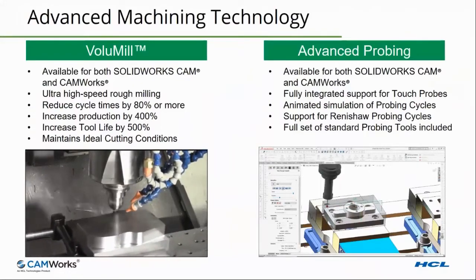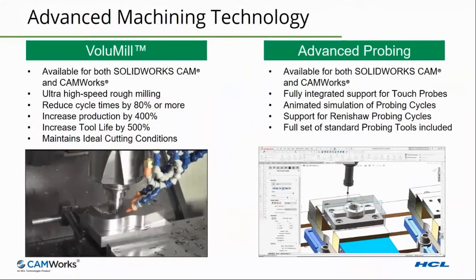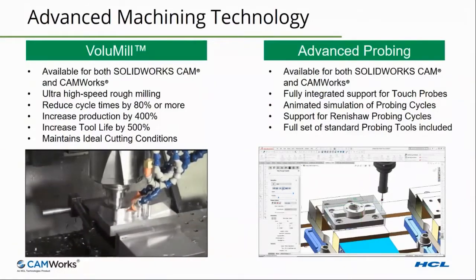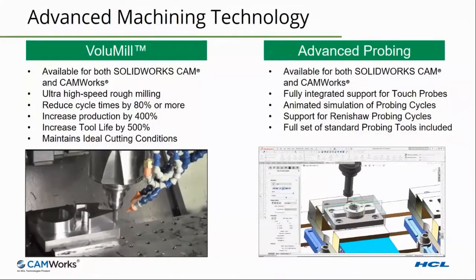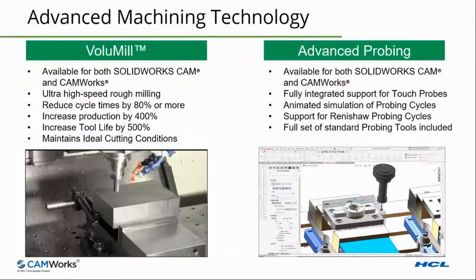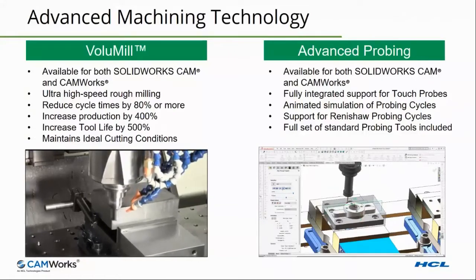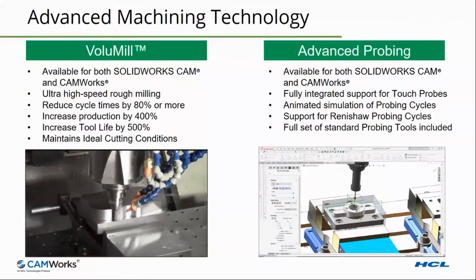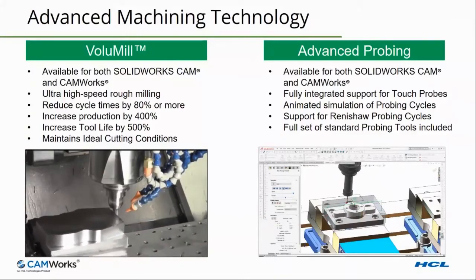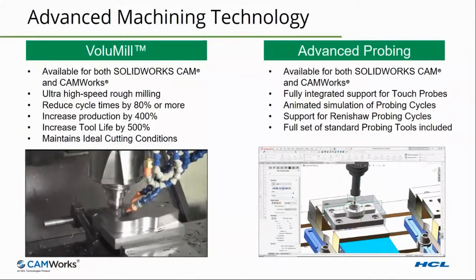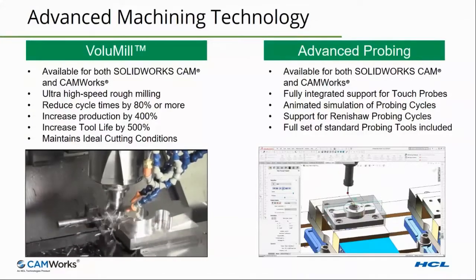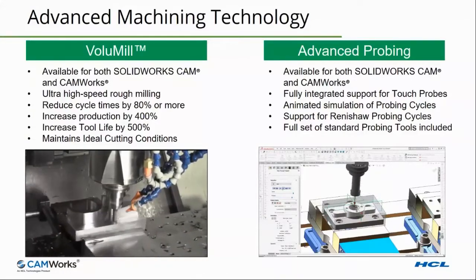SOLIDWORKS CAM Pro also includes some advanced machining technologies. The first is volume mill for ultra-high-speed machining. Volume mill can help reduce cycle times by 80% or more, increase production by 400%, and increase tool life by 500%. There are also advanced probing capabilities available within both SOLIDWORKS CAM and CAMWORKS, including full support for touch probes like the Renishaw touch probes for probing parts and inspection on the machine tool. It includes animated simulation of all the probing cycles, support for all Renishaw probing cycles, a full set of standard probing tools, and user-definable customizable probes.